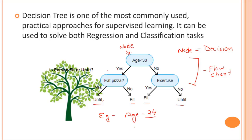Let's take an example: age 24. We check if age is less than 30 — true, so we move down. Next question: do I eat pizza? Yes, casually — so I am unfit according to this model. In reality I might be fit, but according to the model I am unfit. That's how the decision tree algorithm works: each node is responsible for a decision, and from that decision we predict different outcomes.